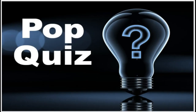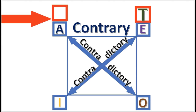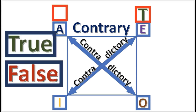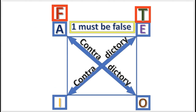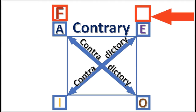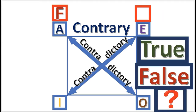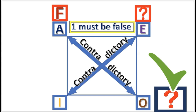Pop quiz: If the E proposition is true, what is the A proposition? The answer is: False — at least one must be false. Next practice problem: If A is false, what is the truth value of E? The answer is: Undetermined — only one must be false, the other can be either.